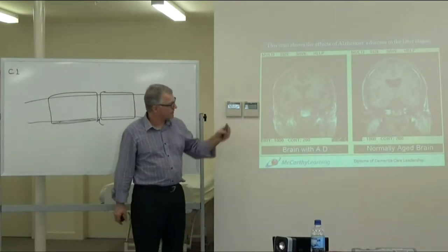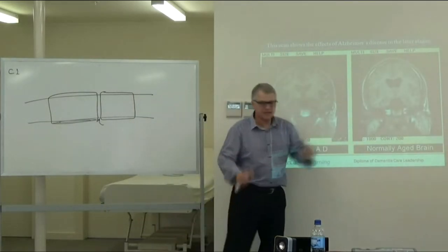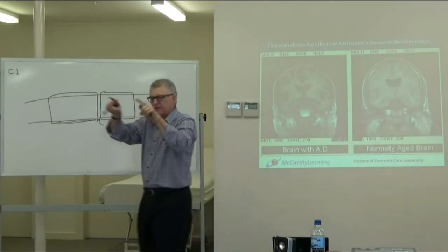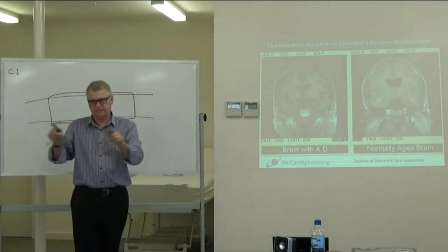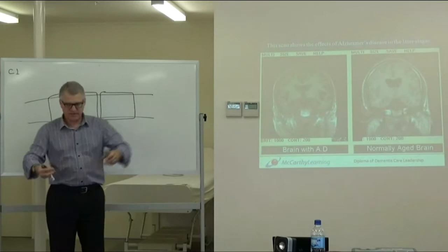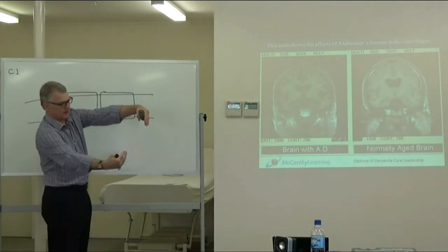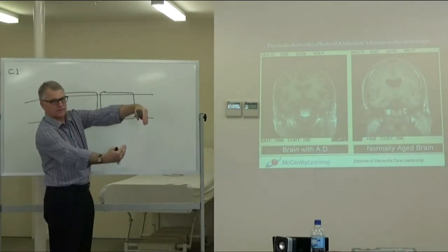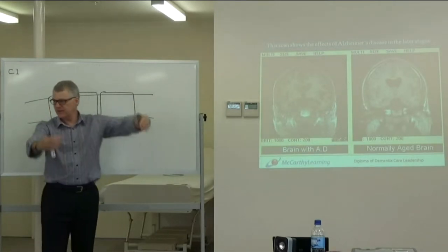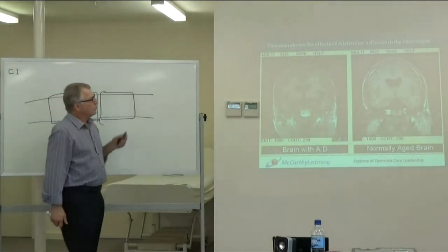The grey matter is about 4 to 6 millimeters thick and folded all the way around the folds of the brain. If you were to fold it all out, you'd end up with a fairly large area of grey matter.